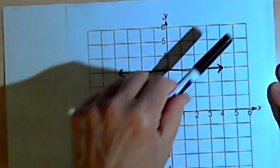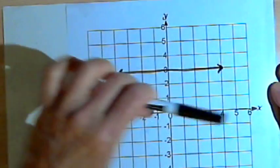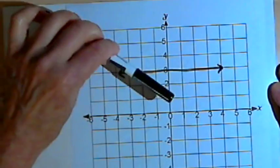Increasing function, we're moving upward from left to right. A decreasing function, we're moving down from left to right.